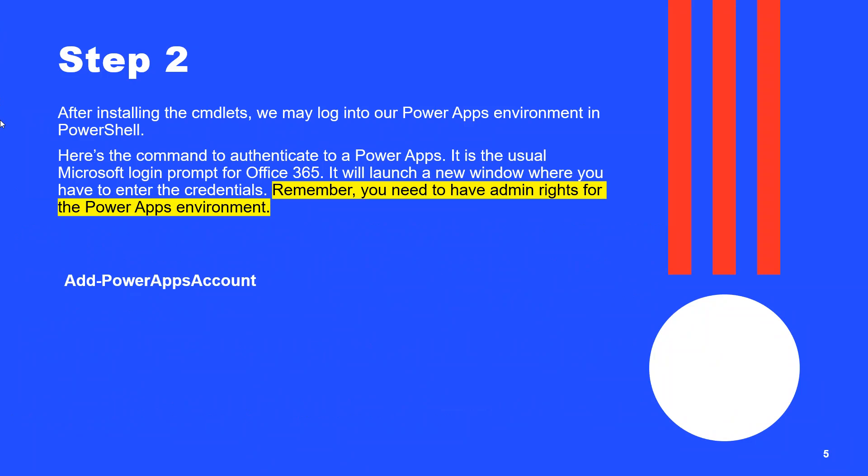This command will ask for your username and password. Remember that you need to have admin rights for the Power Apps environment. Once you are logged into the Power Apps environment through PowerShell, it's time for the final command to hide the consent form. Before executing the final command, it needs two parameters: the environment name and the app ID.